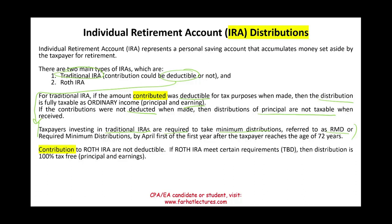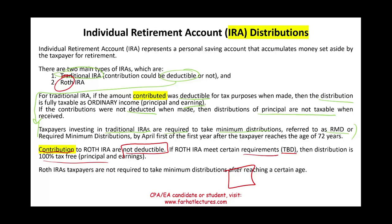Now, contributions made to a Roth IRA — why is it called Roth IRA? It's named after the individual who sponsored the law. When you put money into a Roth IRA, it's not deductible. If the Roth IRA meets certain requirements, the distribution is 100% tax-free. You don't get a tax break now, it grows, and you take it out tax-free. Also, a Roth IRA does not require a minimum distribution, because the government doesn't care about it — you already paid your taxes on that money when you put it in.